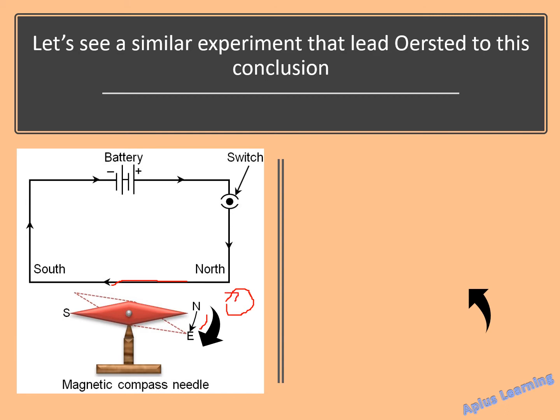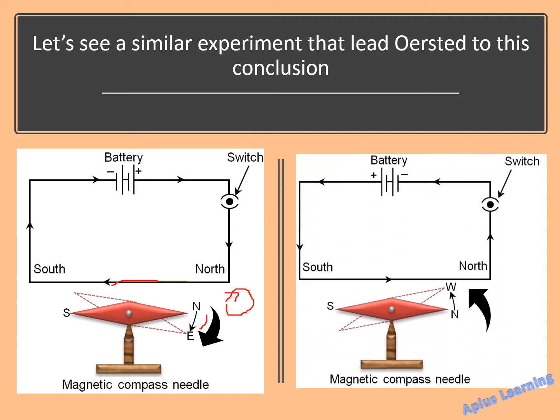Now let's see the similar arrangement but here we have the direction of the current from south to north. When the current flows from south to north, observe the direction of deflection of the magnetic needle — it is getting deflected from north to west, that means this is getting deflected in the anti-clockwise direction.